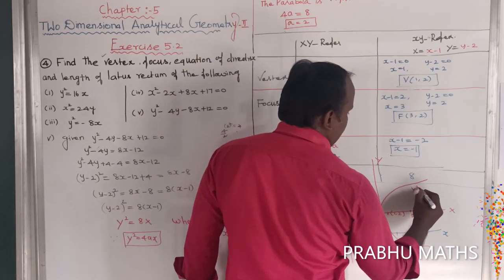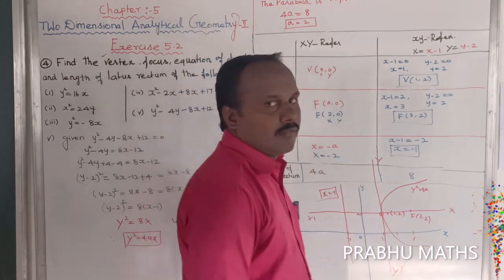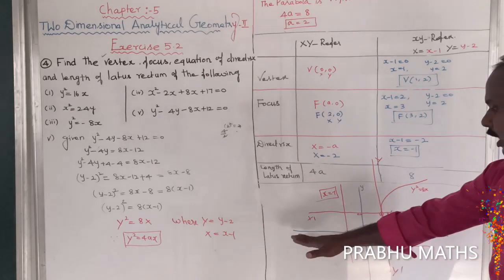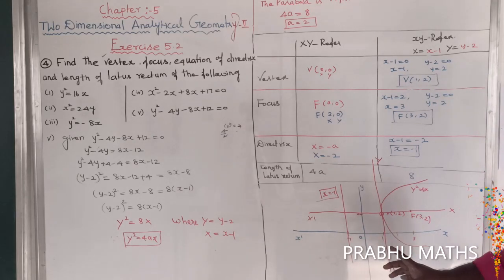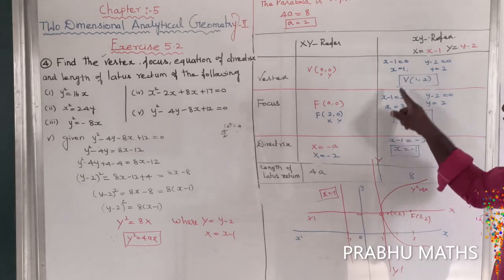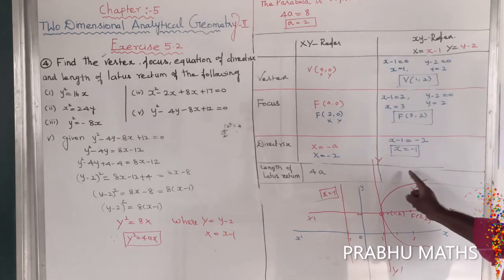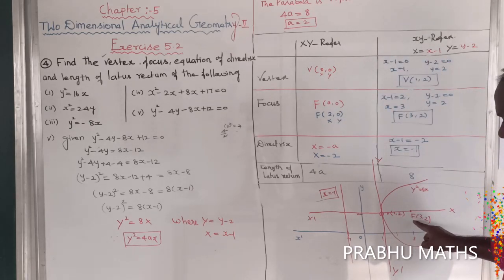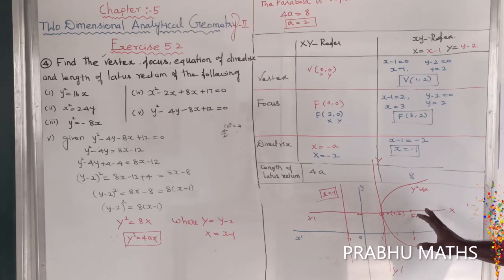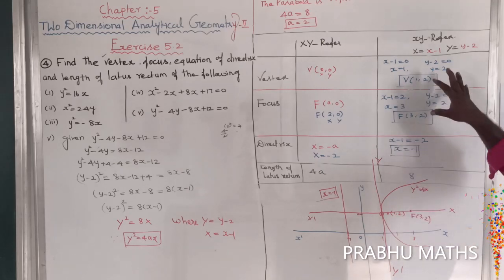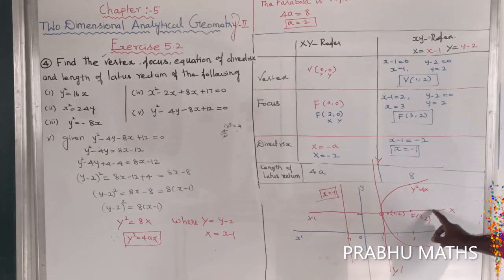The general form being graphed is y squared equals 8x in the shifted system. On the graph sheet, mark the x-y axes, plot the vertex, form the dummy axis, and draw the right-side open parabola. The focus must lie inside the curve. If the focus lies on the closed curve, then the diagram and the answer are correct.